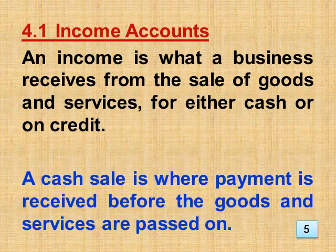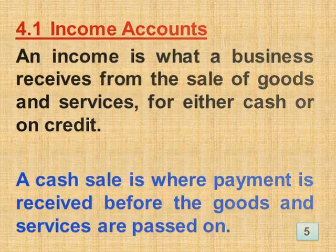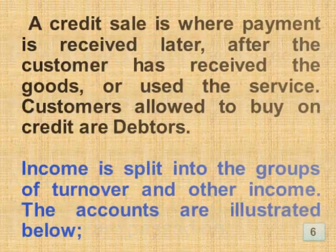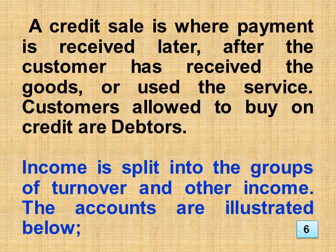Section 4.1 Income Accounts. An income is what a business receives from the sale of goods and services for either cash or on credit. A cash sale is where payment is received before the goods and services are passed on. A credit sale is where payment is received later after the customer has received the goods or used the service. Customers allowed to buy on credit are debtors. Income is split into the groups of turnover and other income.